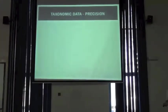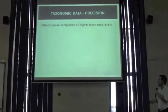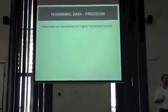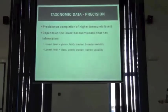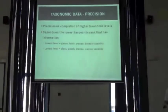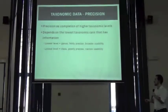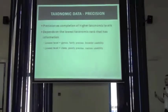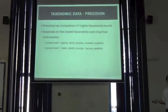What about taxonomic data? What is precision in taxonomic data? Precision here is seen as the completion of higher taxonomic levels. The more levels we have, the more precise our taxonomic information will be. The precision depends on the lowest taxonomic rank that has information. If our lowest level of information is the genus, then that's a fairly precise record, and it might be useful for a broader range of possible uses.